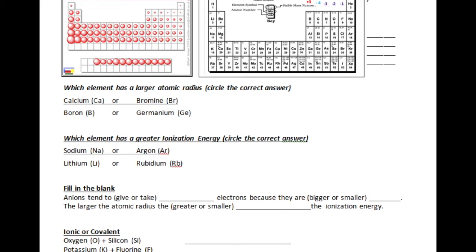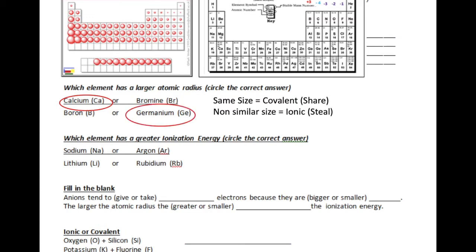The element that has a larger atomic radius is calcium because it's further to the left on the periodic table than bromine. Germanium also has a larger atomic radius being further to the left. Higher ionization energies are in the top right of the periodic table, so argon has a higher ionization energy than sodium, and lithium has a higher ionization energy than rubidium.